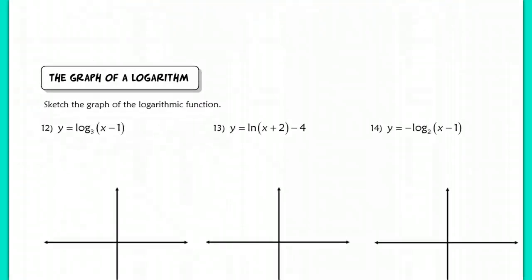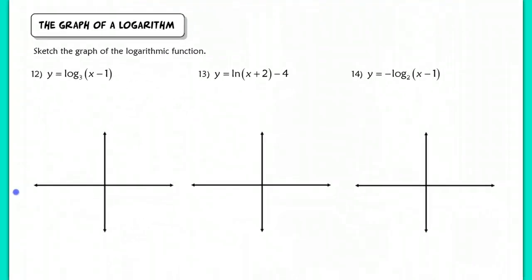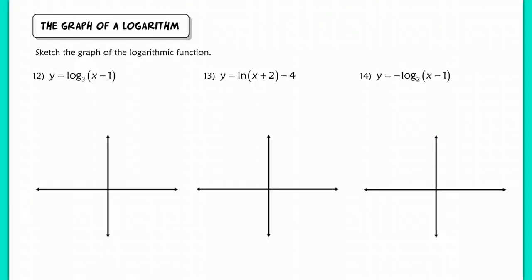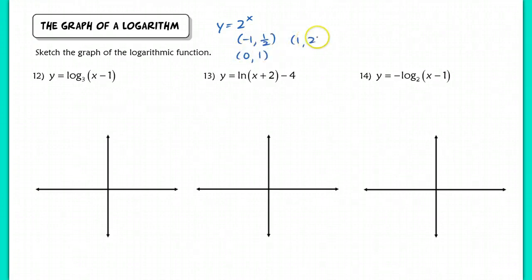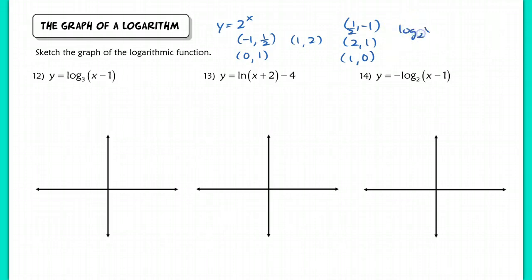Now let's move on to graphing. The log function is the inverse of the exponential function. So if I start with y equals 2 to the x, the key points — negative 1, one-half; 0, 1; and 1, 2 — all flip to become one-half, negative 1; 1, 0; and 2, 1 on the graph of log base 2 of x equals y. This gives a good basis for graphing these functions using transformations.